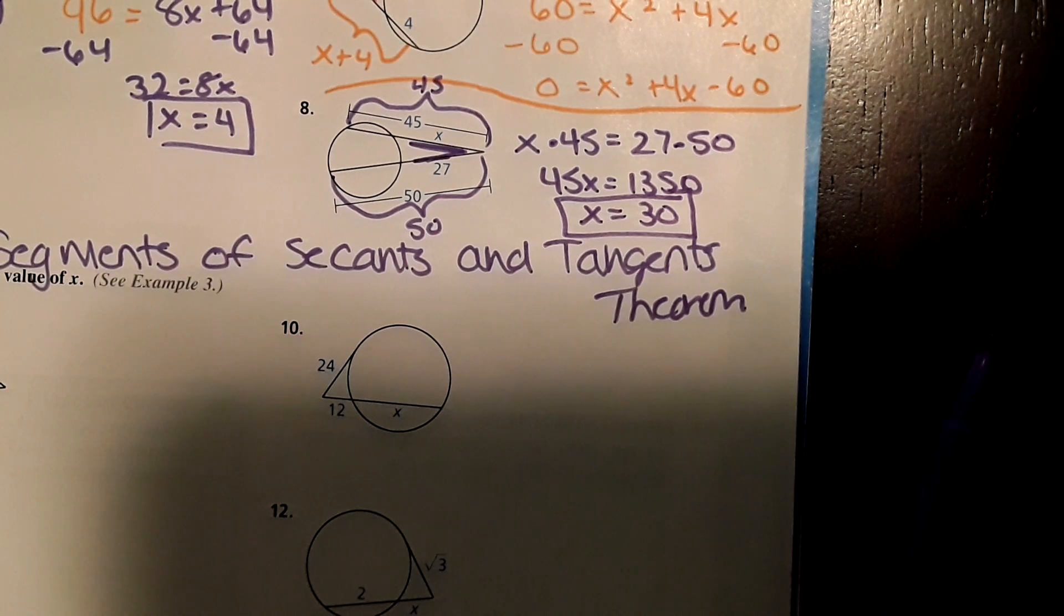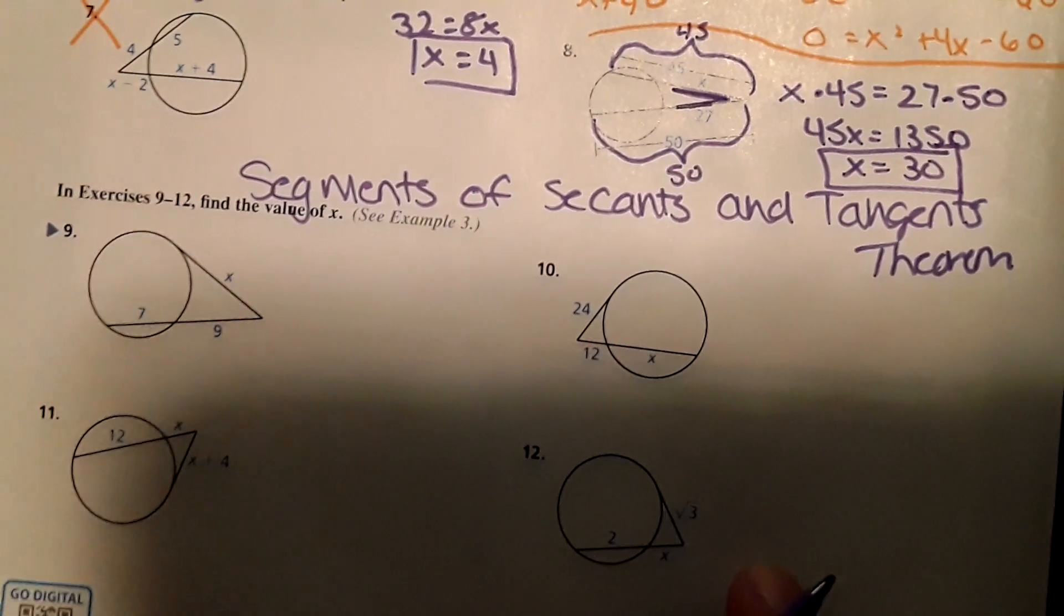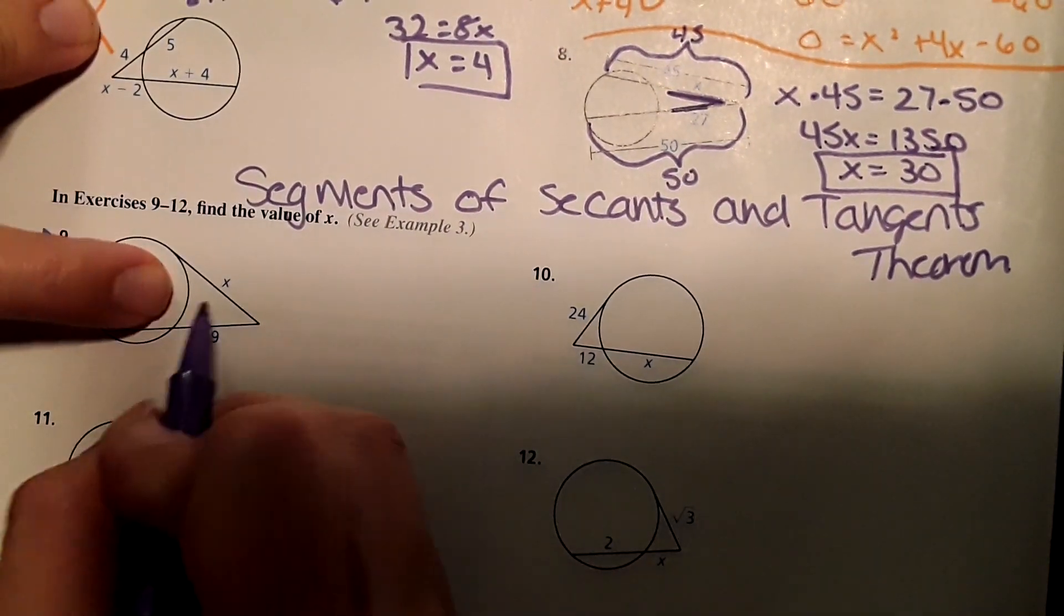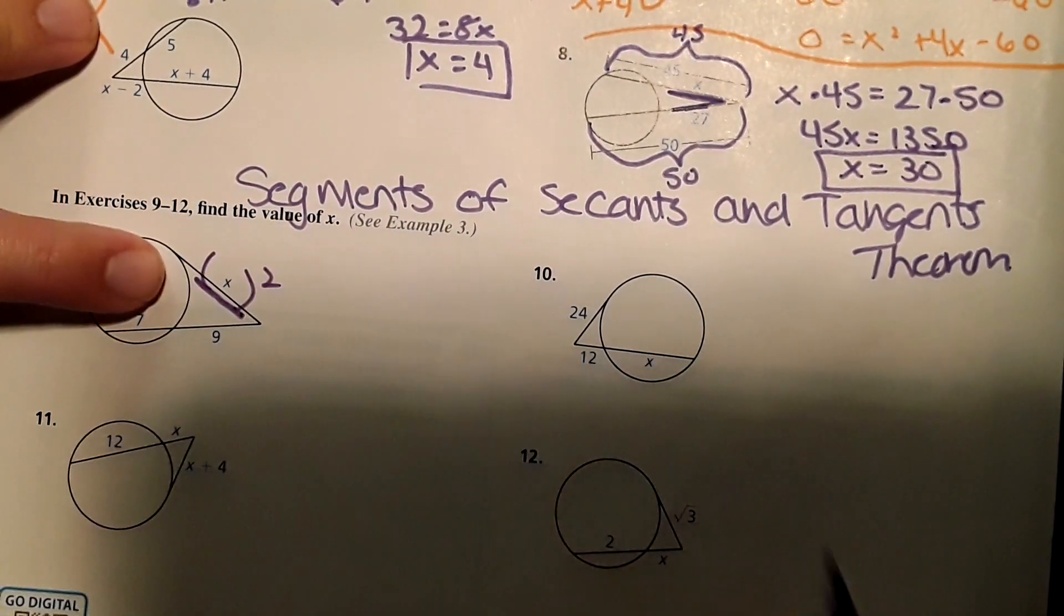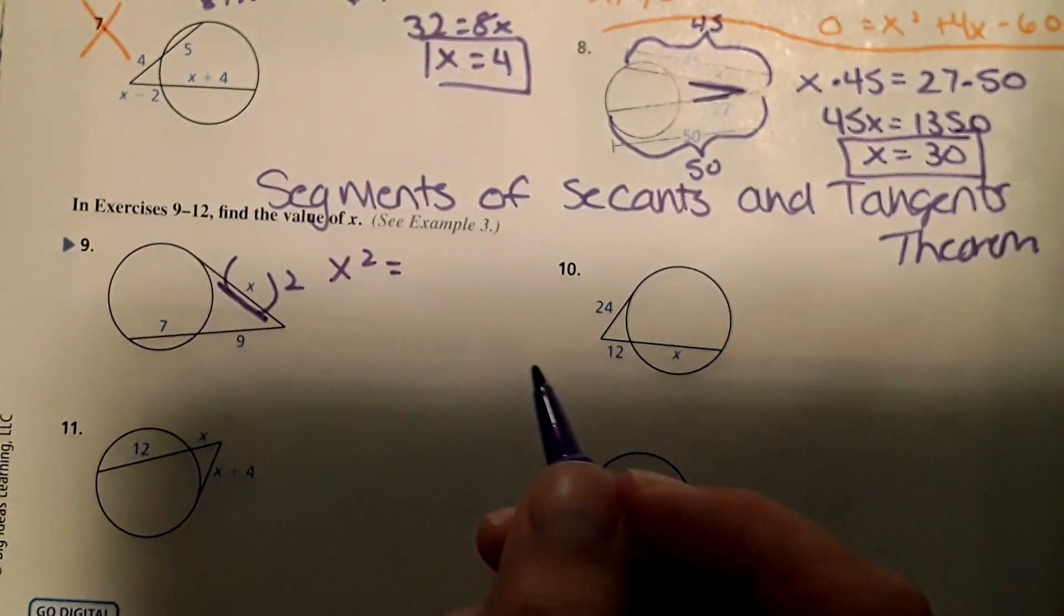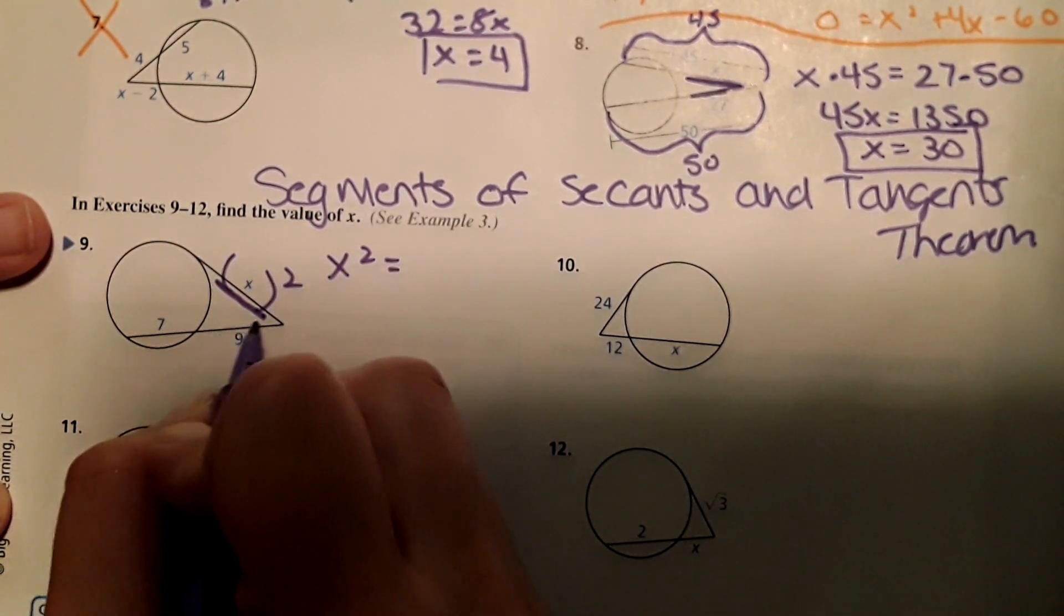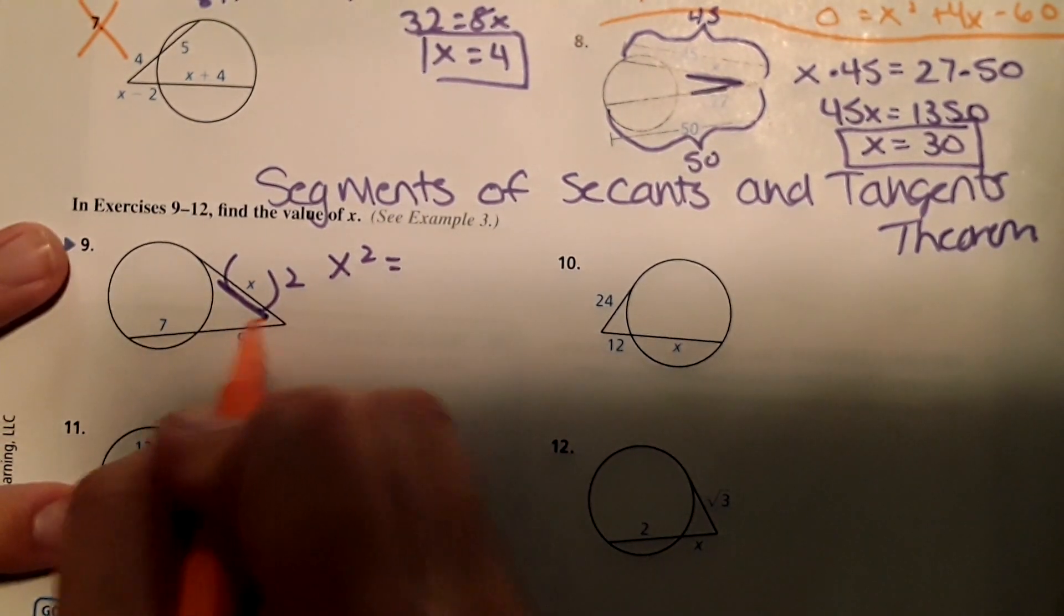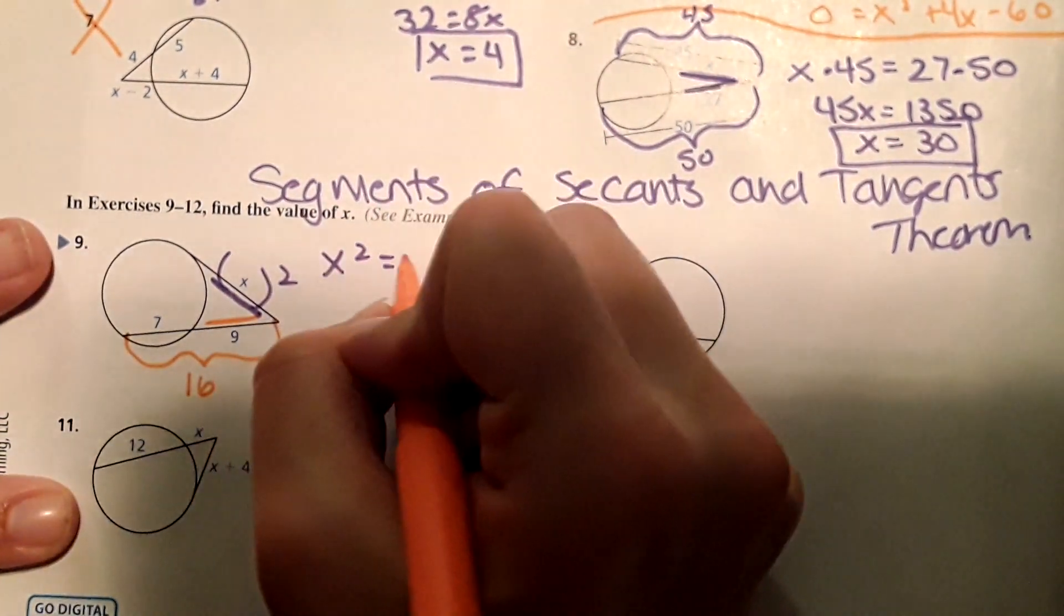The next type of problem here: number 9, segments of secants and tangent theorem. For this one, what we're going to do is take this short segment and we're actually going to square it. So this is going to be X squared equals—and then on this side, the same thing we did on the last problem—it'll be 9, the shorter side, times the entire thing, so 9 times 16.